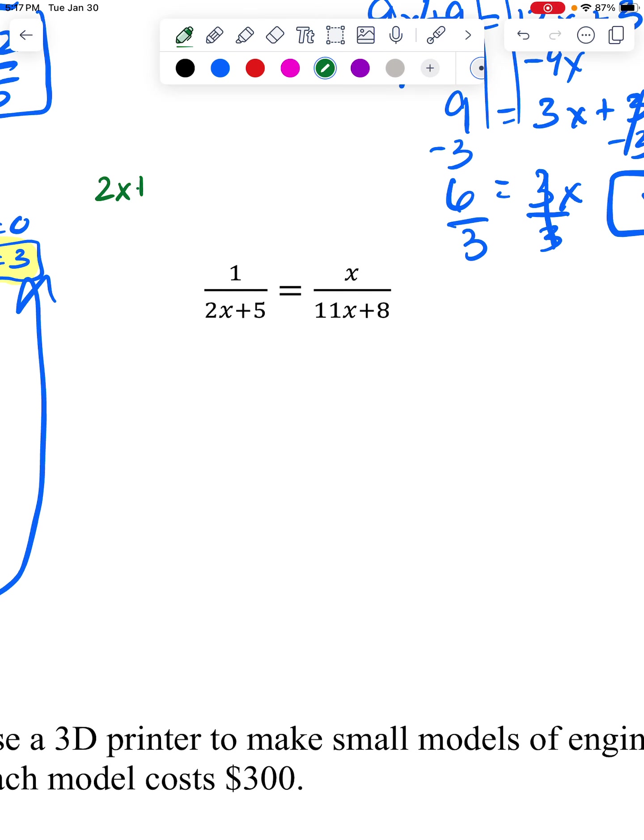Before I start, I'm going to take this bottom, and I'm going to set it equal to zero. I'll have to take away five and divide by two. So if I get a negative five over two later, I won't be able to use it because that makes the bottom zero.